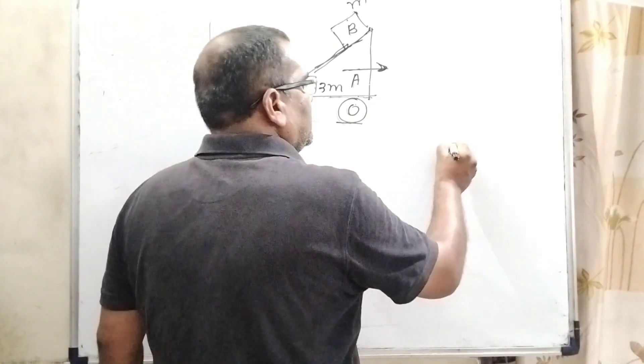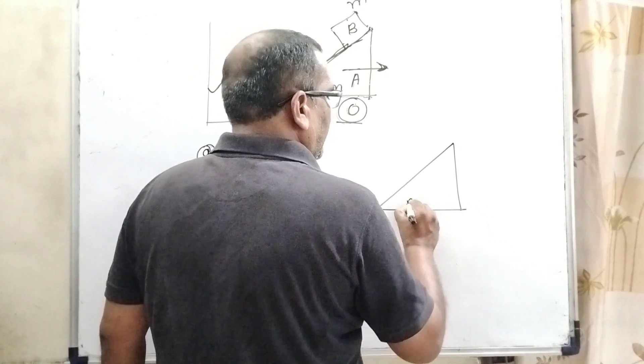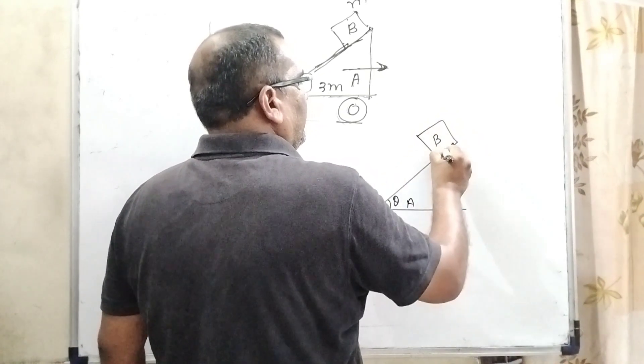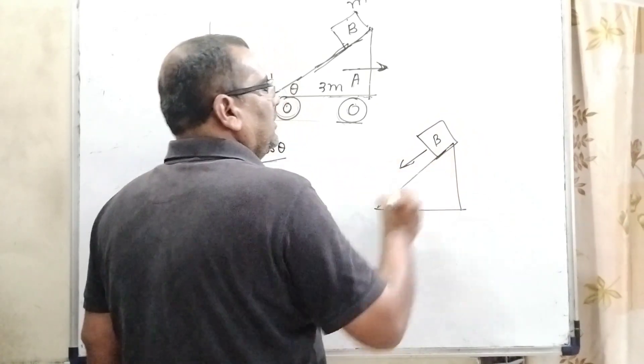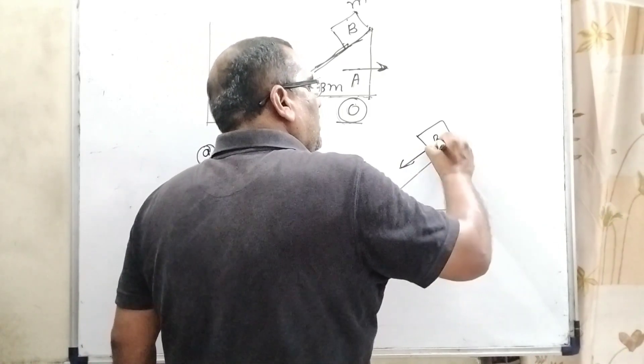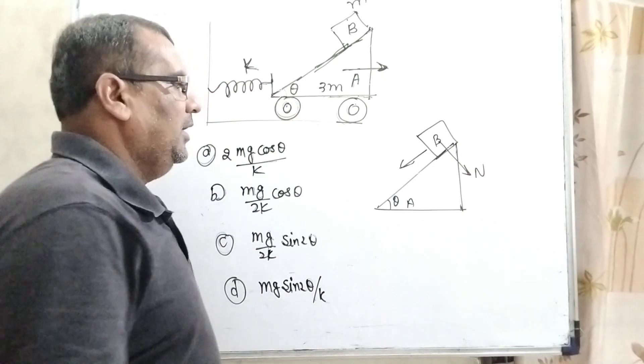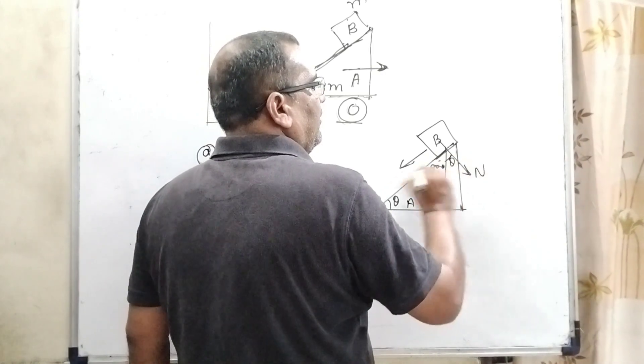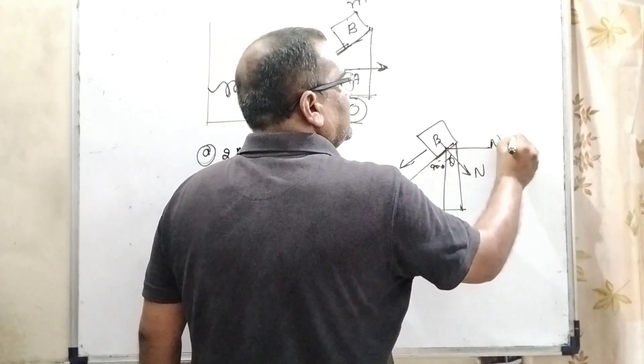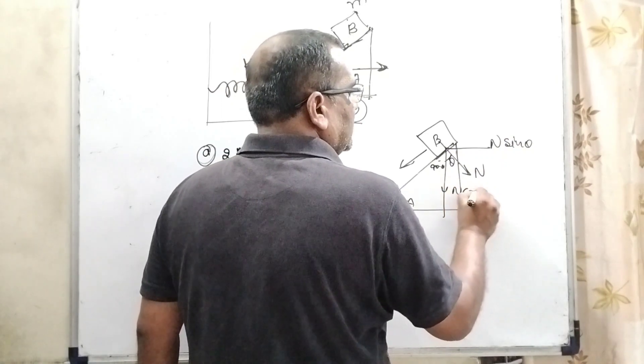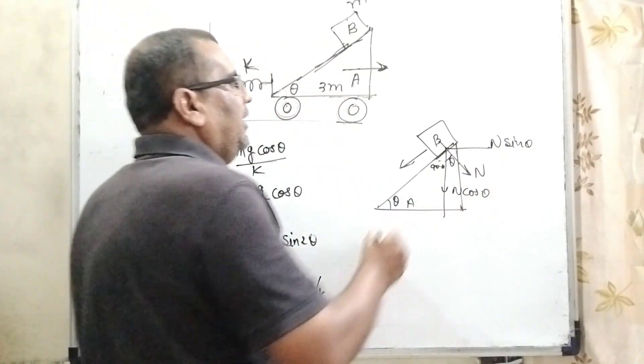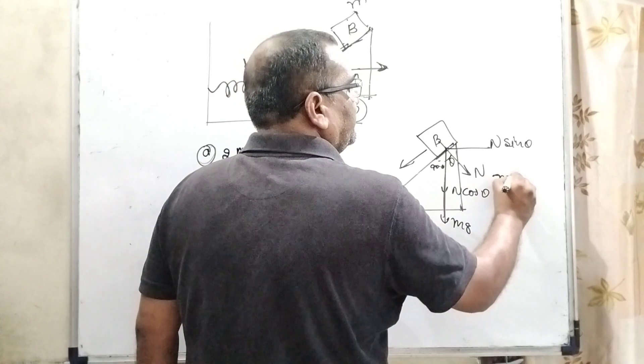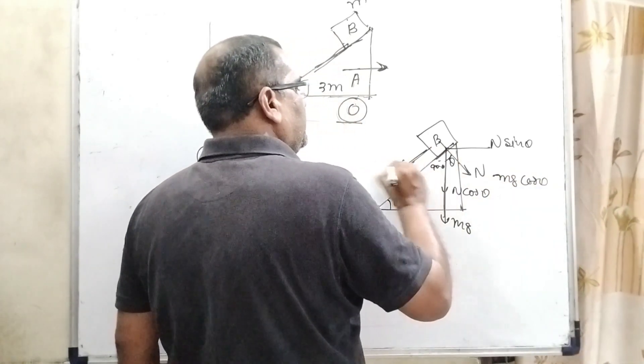Now for the second case, this is wedge A. Inclination is theta. This is B block, and it begins to slide in the downward direction. And at that moment, normal force is acting in this direction. As we know that here given theta, it is 90 minus theta, so it is theta. Then divided into components, that is N sin theta, that is N cos theta. And here, Mg is also acting in the downward direction.